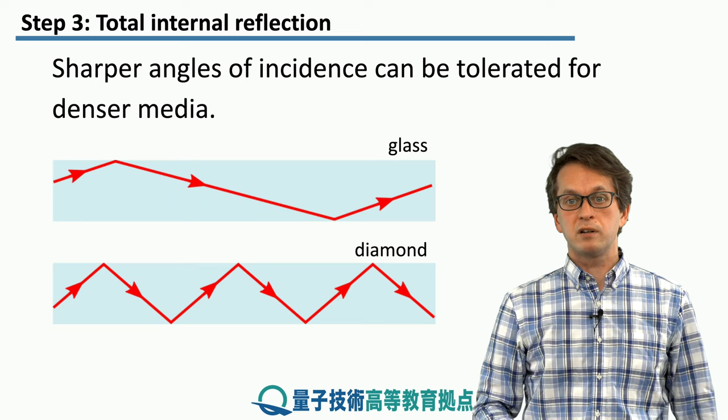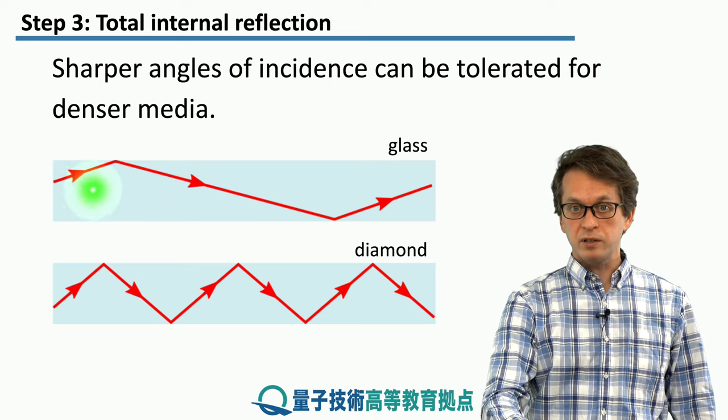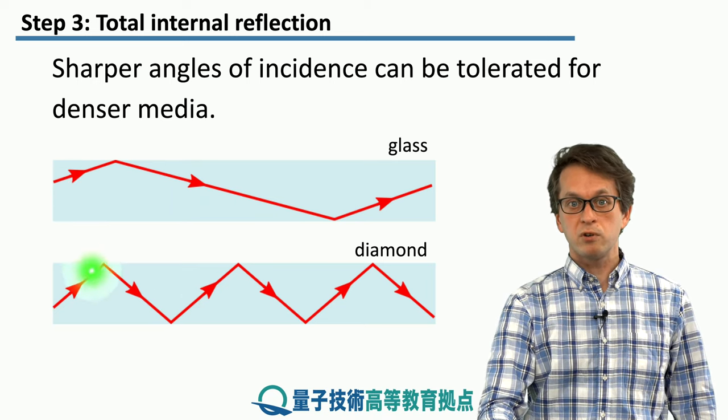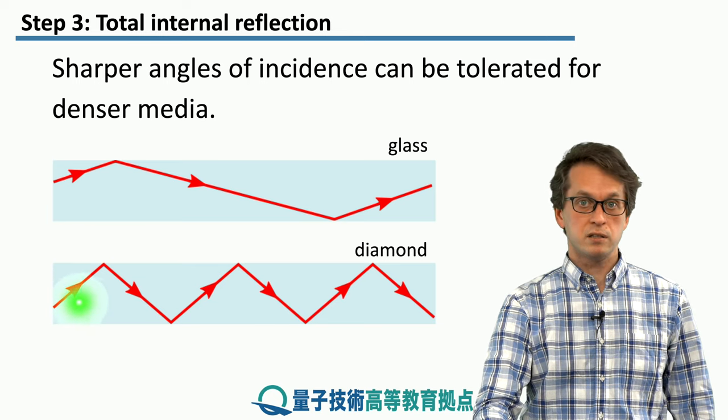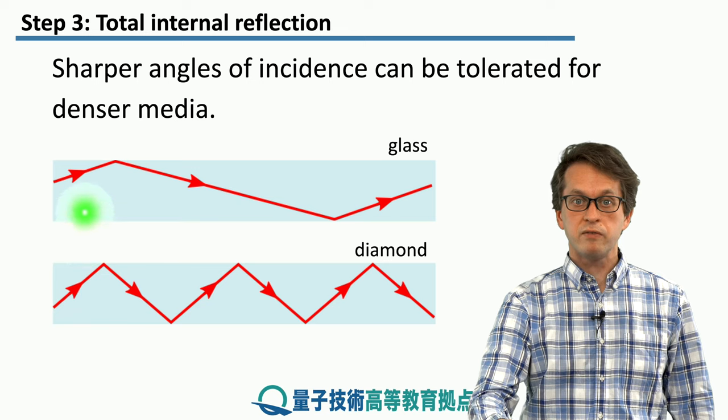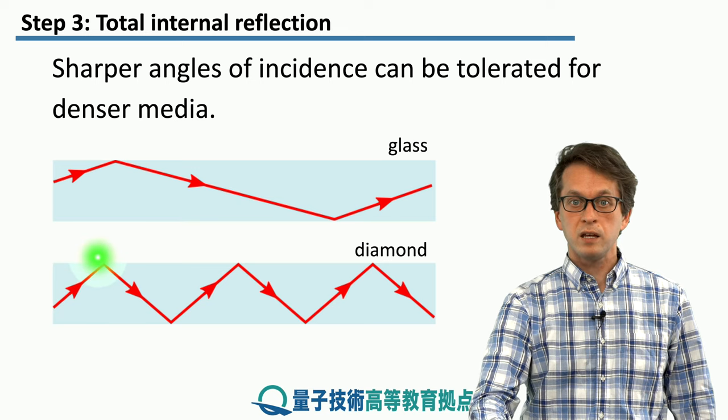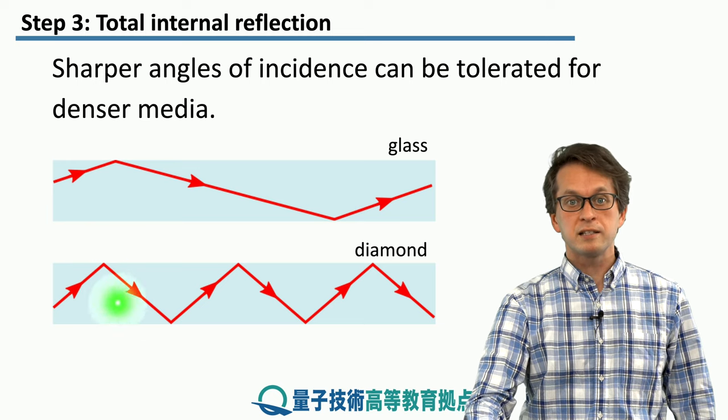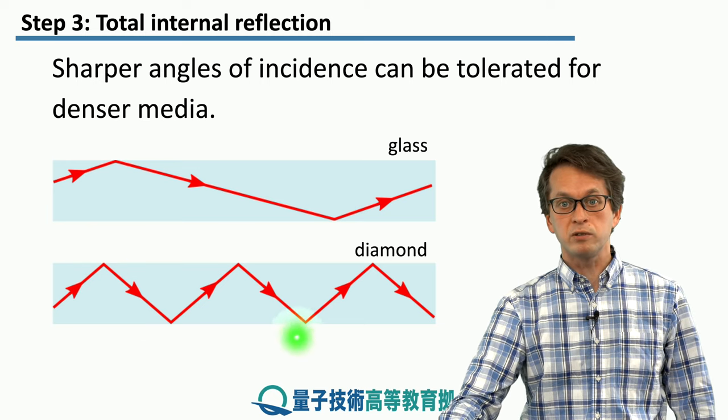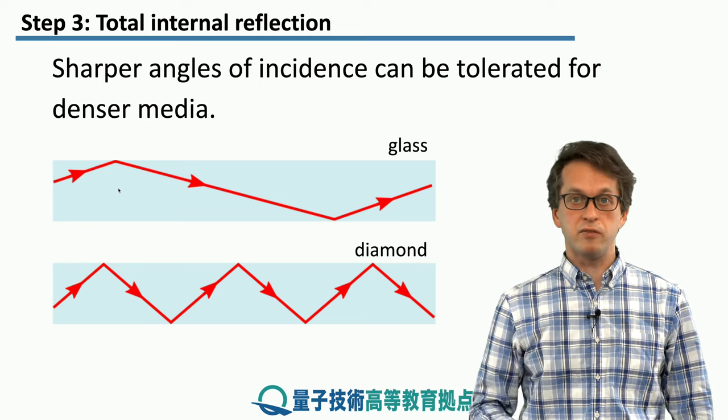Whereas in diamond, the light is confined more strongly. It can have an incident angle which is smaller than it is in the glass. So even if it's incident on the surface at this much steeper angle, it still can get reflected and be contained and guided by the fiber.